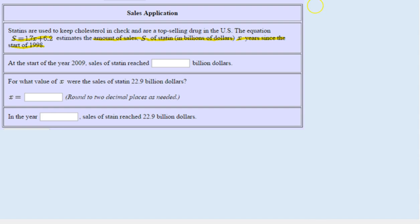So we have a formula S equals 1.7X plus 6.2. And we're told that S represents the amount of sales of statin and that's measured in billions of dollars.